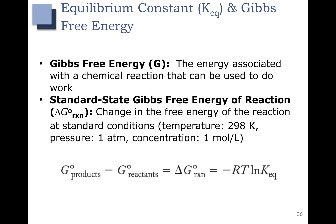First, let's go over Gibbs free energy. Gibbs free energy is identified with the letter G, and it is the energy associated with the chemical reaction that can be used to do work. You can see here that we can calculate the standard state Gibbs free energy for a reaction, or the delta G0 of the reaction, by taking the delta G0 of the products, subtracting the delta G0 of the reactants, and that will get us to the standard state Gibbs free energy for the reaction — the change in the free energy of the reaction.